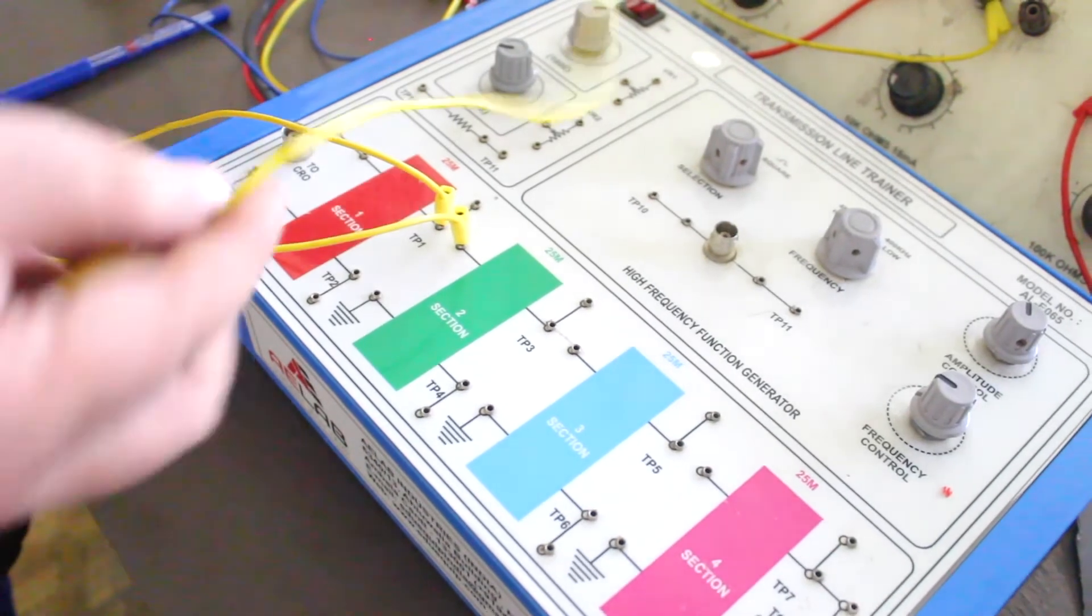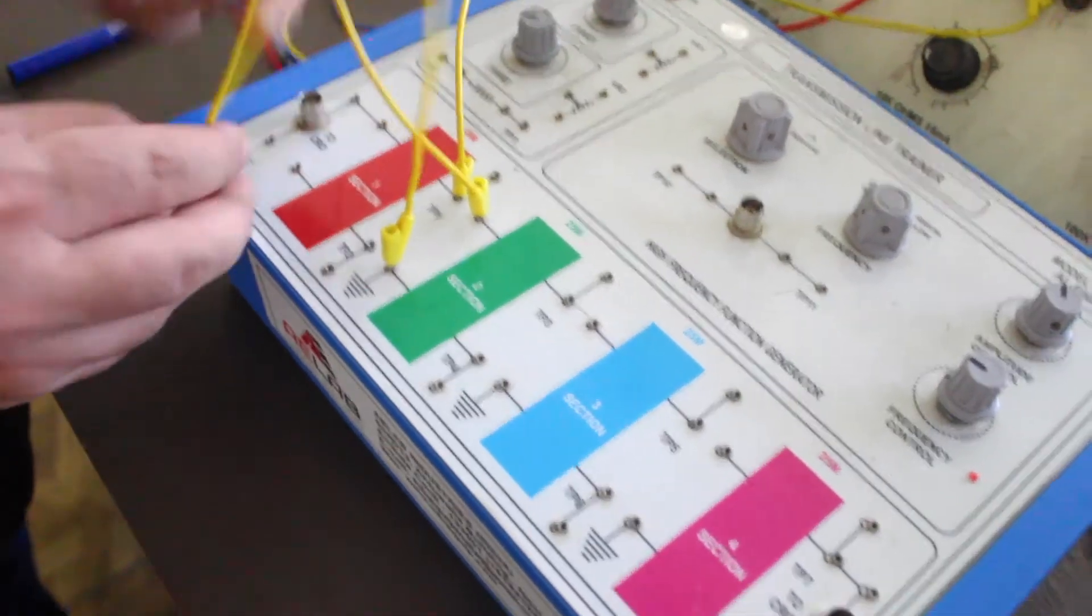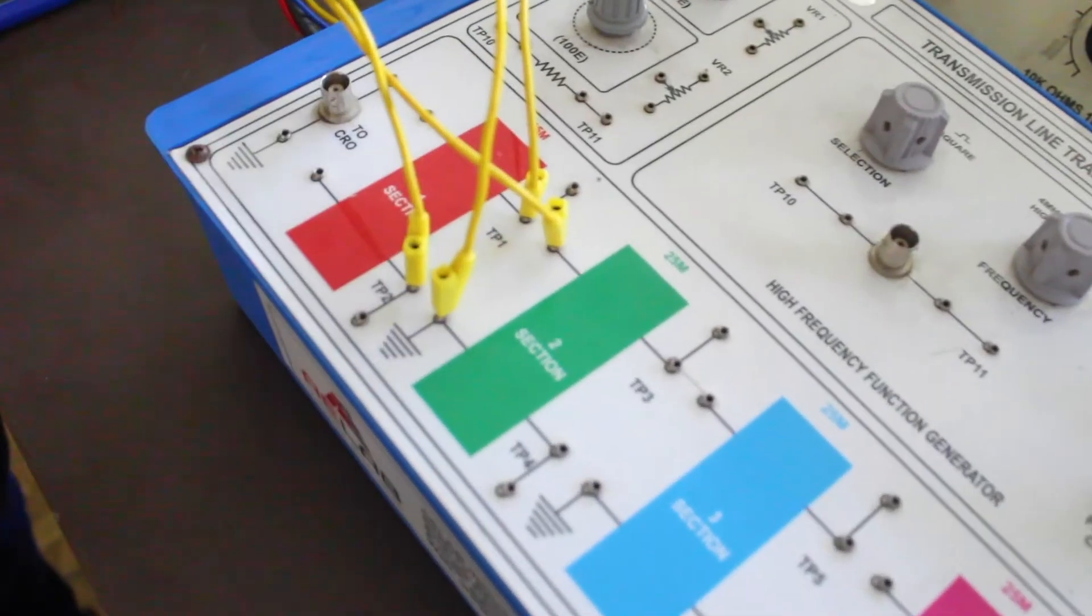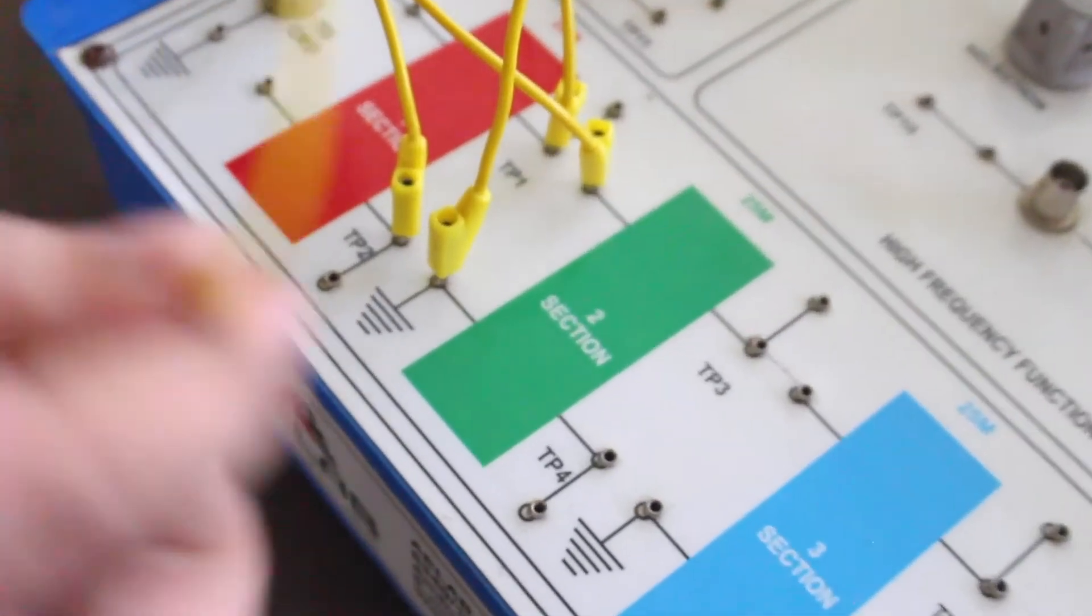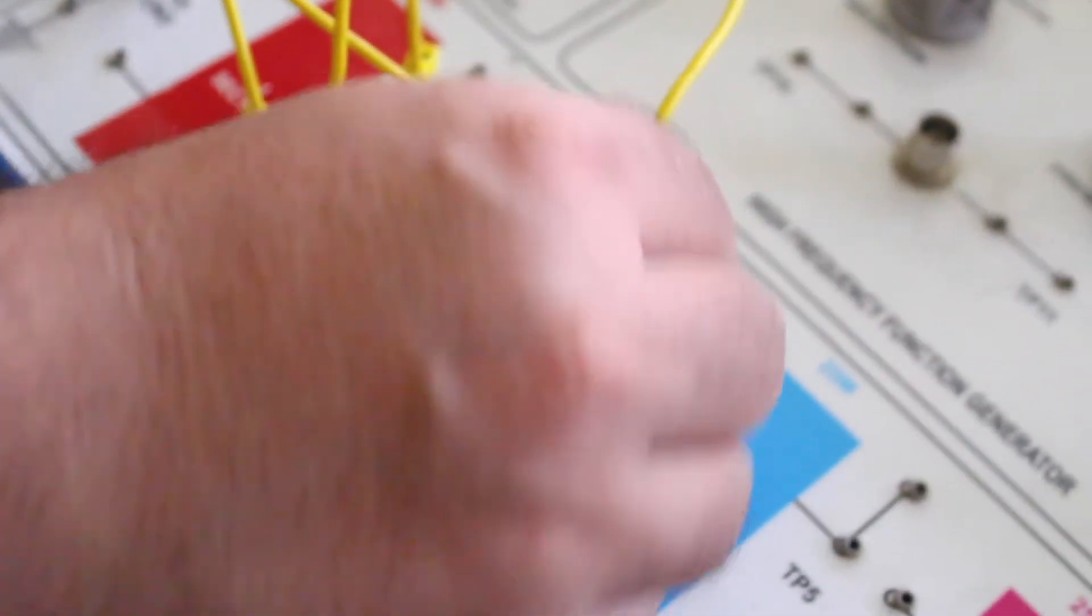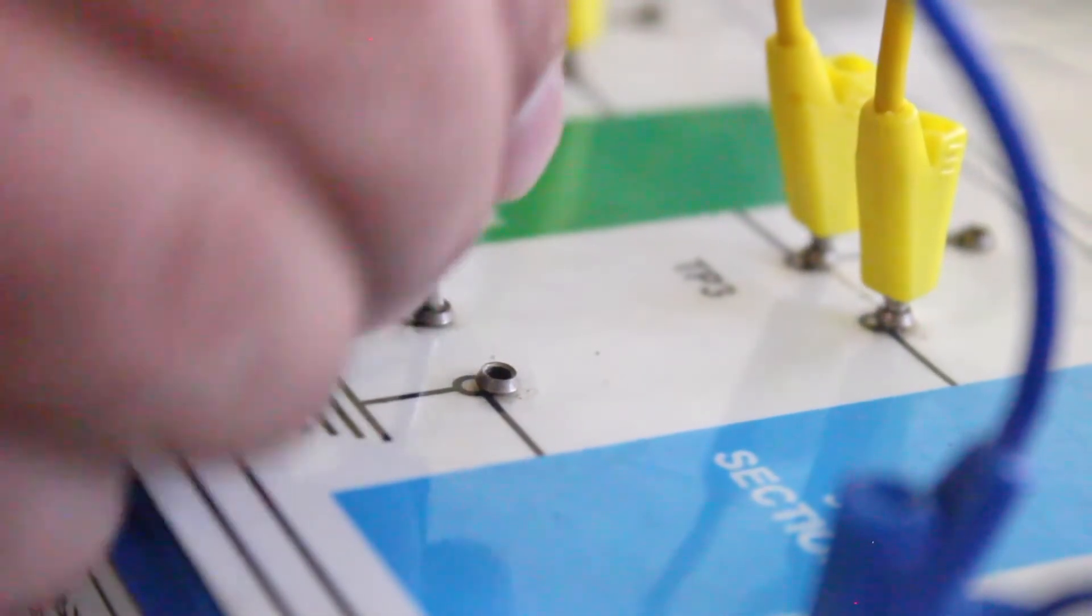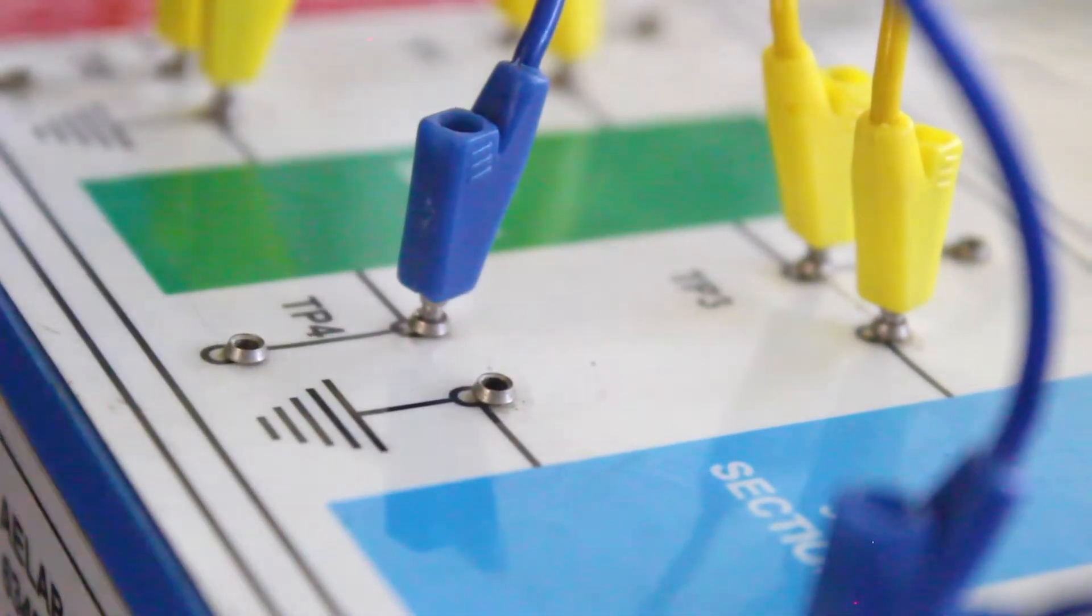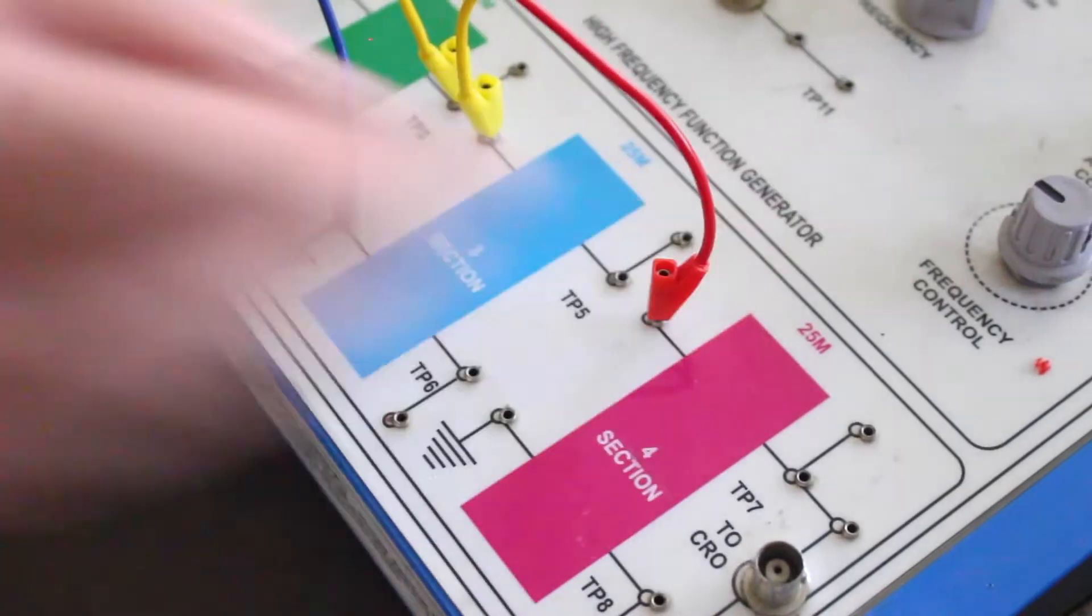So I am connecting the different sections. Section 1 to section 2, we are using simple patch cords, and section 2 to section 3. Because it is a 2-wire system, as you know the coaxial cable, so we need to connect both the wires.